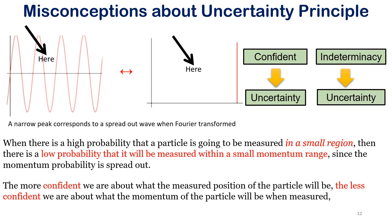When we use the word confident instead of uncertain, the name uncertainty principle comes out as a misnomer — it is not about being uncertain about position and momentum, but about how confident we are in predicting what the position and momentum will be when measured. So we can use the term indeterminacy instead of uncertainty. Indeterminacy refers to a situation where the outcome or behavior of a system cannot be precisely determined or predicted, suggesting inherent unpredictability. Uncertainty, by contrast, refers to a lack of knowledge or information about a situation.